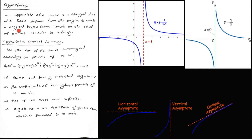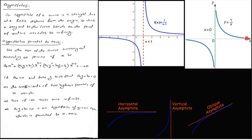Asymptotes: the original concept and formal definition. An asymptote of a curve is a straight line at a finite distance from the origin to which a tangent to the curve tends as a point of contact proceeds to infinity. For example, with the curve y = 1/x, the distance between the curve and the line approaches 0 as x tends to infinity.